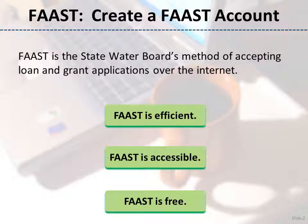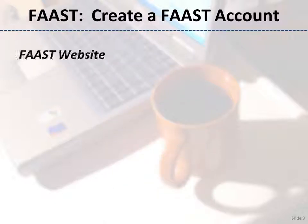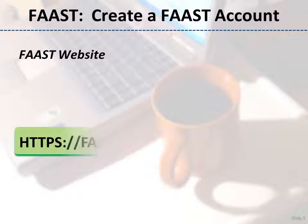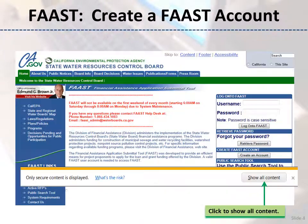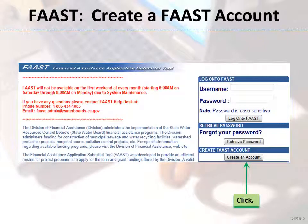Now, let's learn how to create a FAST account. Go to the FAST website, which is located at https://faast.waterboards.ca.gov. When the "only secure content is displayed" pop-up appears, click the Show All Content button. Look for the Create FAST Account heading on the right side of the screen. Click the Create an Account button to initiate the account registration process.